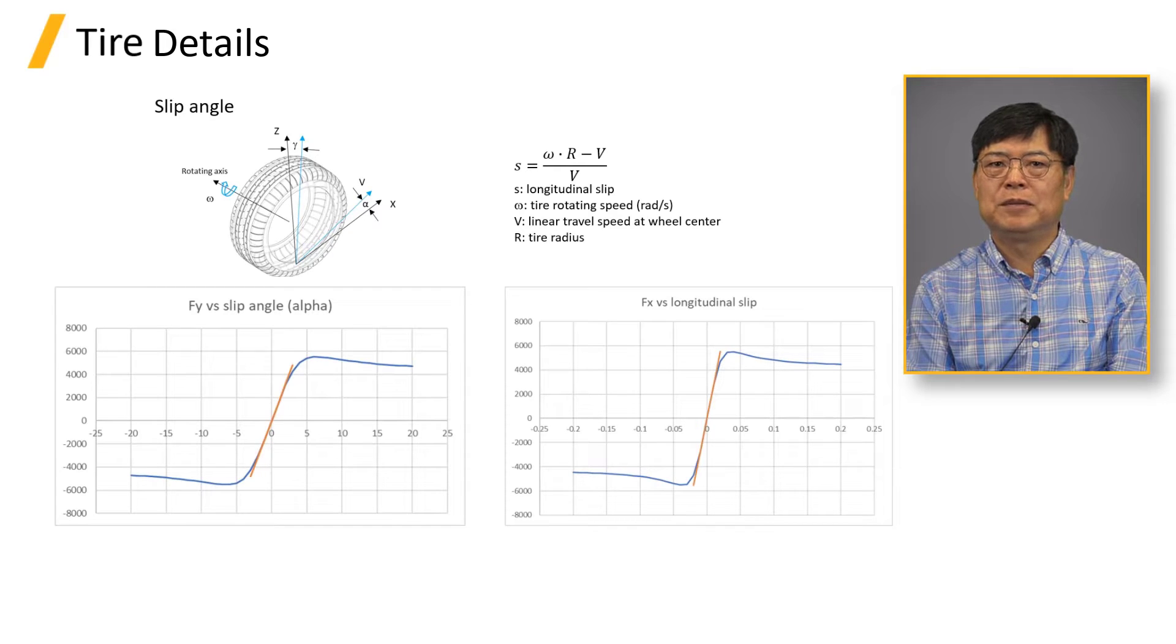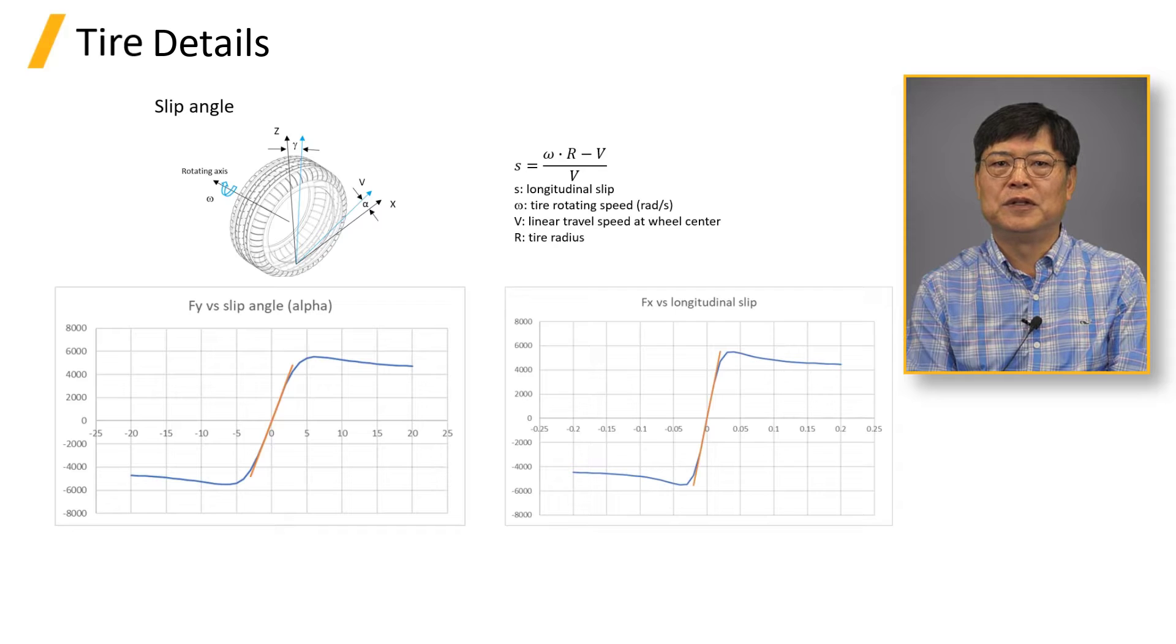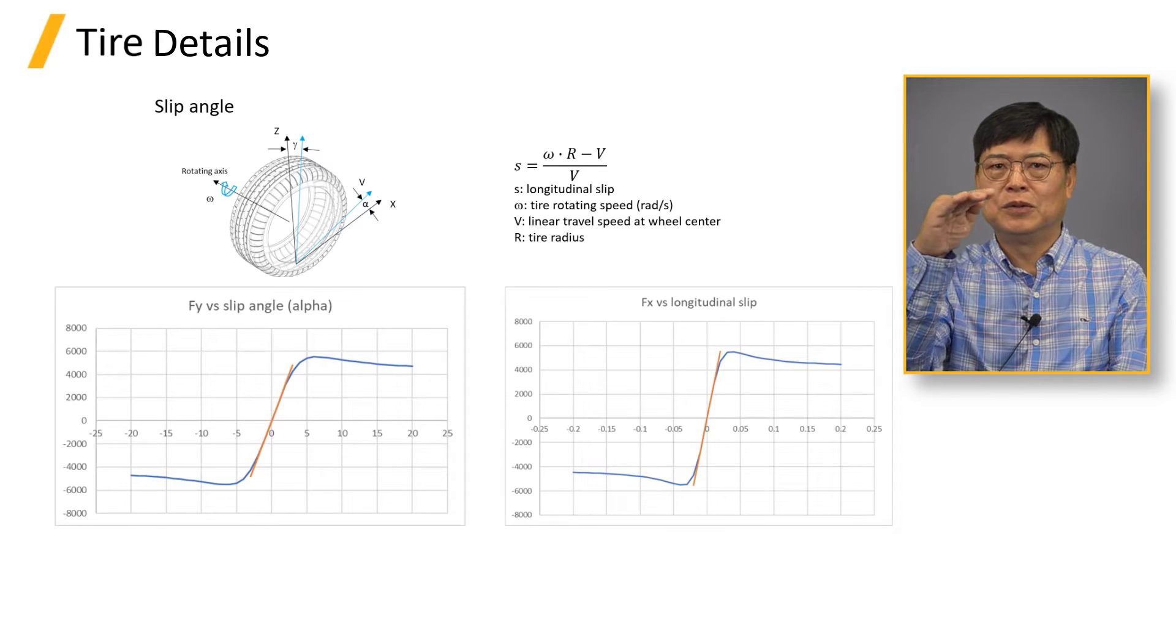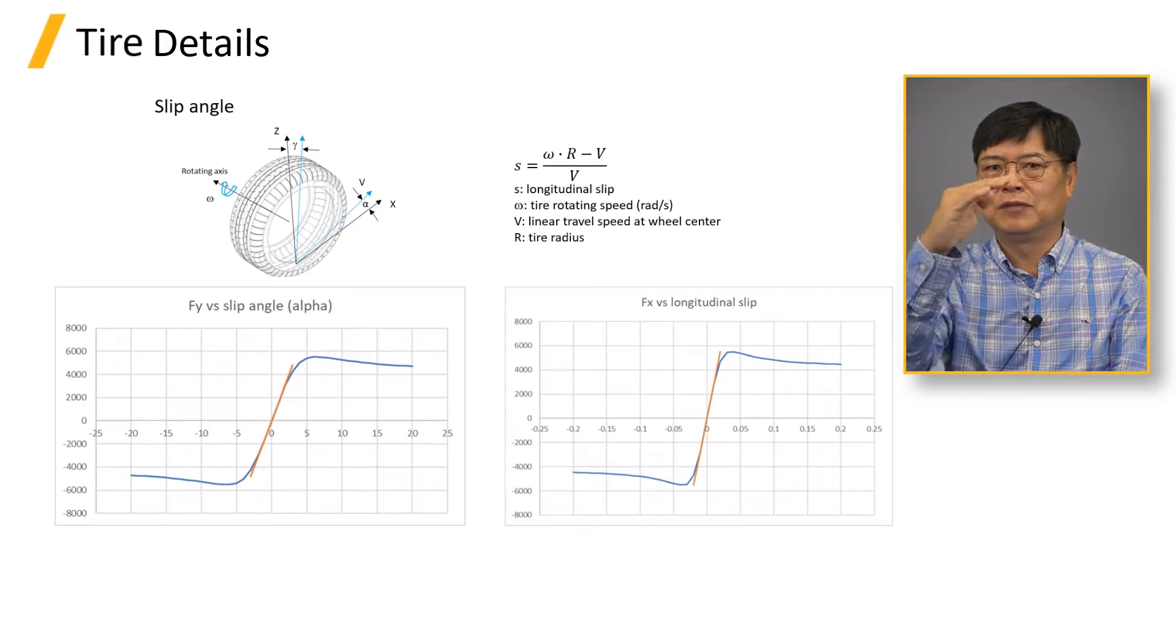Fiala tire is represented by the cornering coefficient only. It does not have lateral force saturation nor the lateral force decline after the peak.